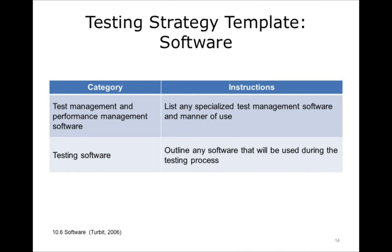To plan for software needs, typical elements include test management and performance management software. List any specialized test management software to be used to document the testing, record discovered issues, and manage the mitigation process. Also include any specialized testing software needed to generate the testing environment or automate repetitive testing functions. You will need to outline any software that will be used during the testing process.